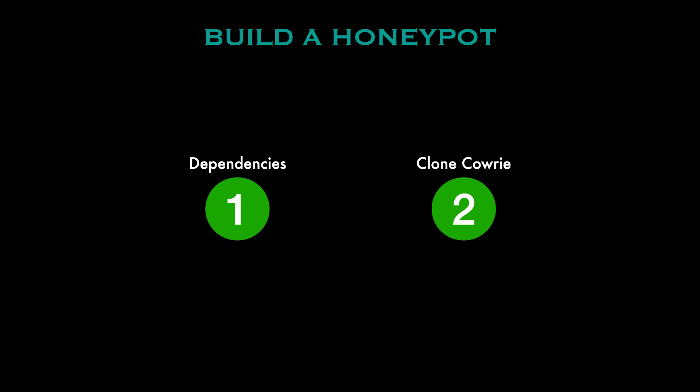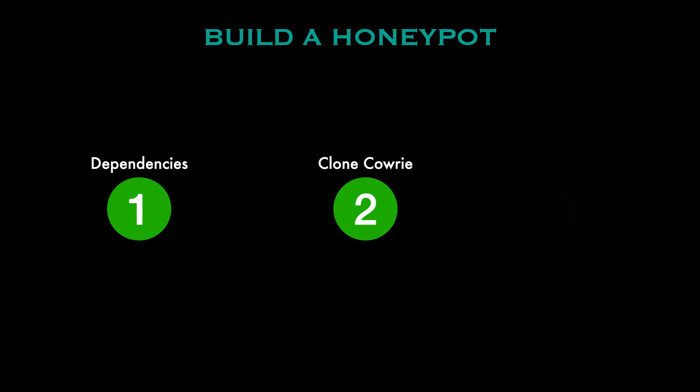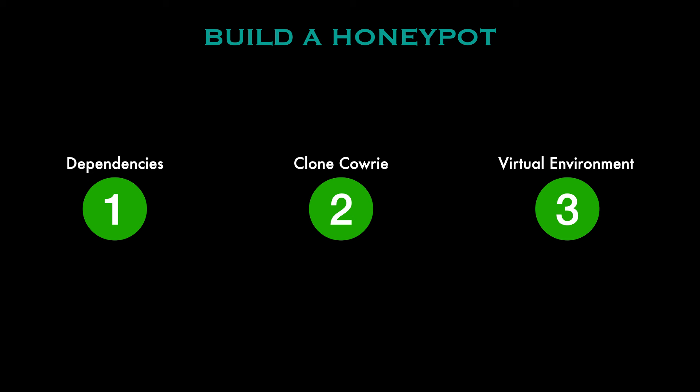After this you'll move on to step three: setting up the virtual environment. A virtual environment isolates Cowrie's dependencies and Python packages from the rest of your system, which helps keep your system clean and ensures compatibility. These are three vital and fundamental steps you need to get correct. If you have any questions or get stuck, head to our Discord where you can ask about this project in detail.